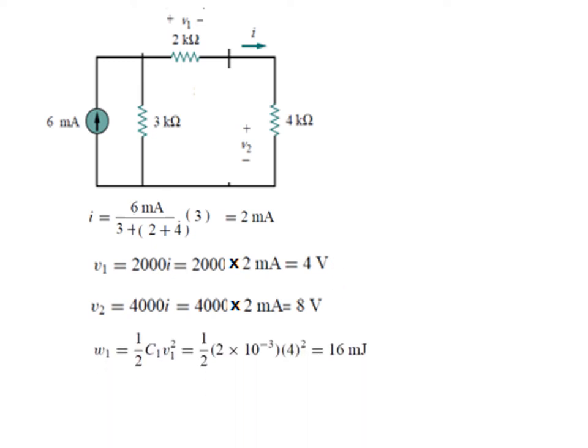We can find the two energies. Omega 1 is half C1 V1 square. Putting the value of the capacitor that was here, and the voltage 4 square, the answer becomes 16 millijoule. Similarly, we can find omega 2, the energy of the second capacitor.